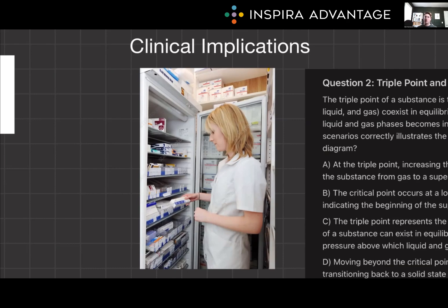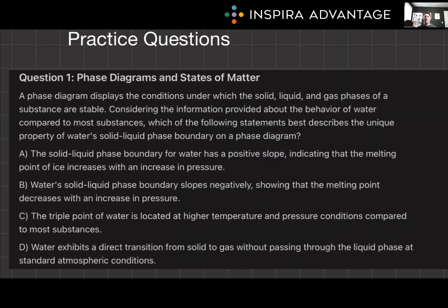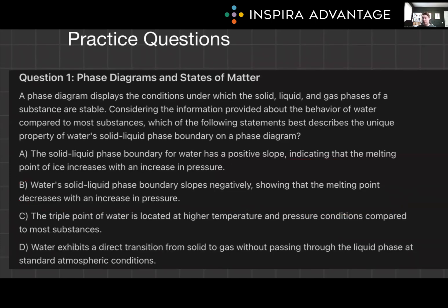Let's finish off with some MCAT-like questions to drive home these essential concepts. A phase diagram displays the conditions under which the solid, liquid, and gas phases of a substance are stable. Considering the behavior of water compared to most substances, which statement best describes the unique property of water's solid-liquid phase boundary on a phase diagram? In this case, our answer is B: water's solid-liquid phase boundary slopes negatively, showing that the melting point decreases with an increase in pressure. This reflects the unique property of water where ice is less dense than liquid water due to its molecular structure, causing ice to melt under pressure.